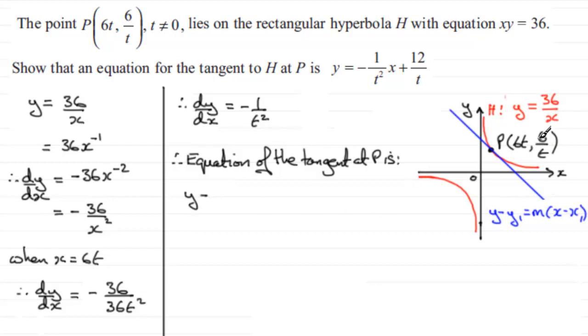y₁ is 6 over t, equals the gradient m which is minus 1 over t squared, multiplied by x minus x₁. And x₁ is the x coordinate of P, which is 6t.